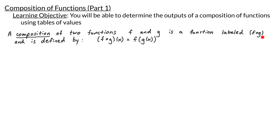So what does this new function do and how is it related to f and g? The composition function is defined so that when we input an x, the output is computed by doing f of g of x — meaning we're taking the output g of x and plugging it in as the input to the f function.